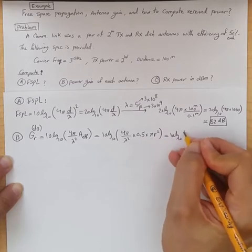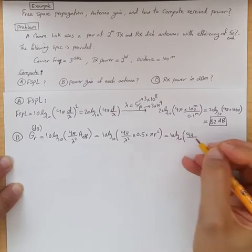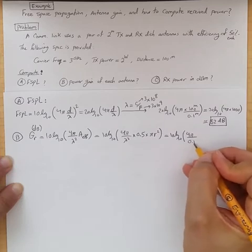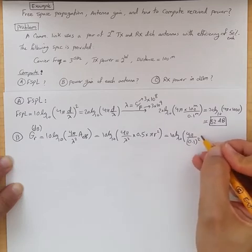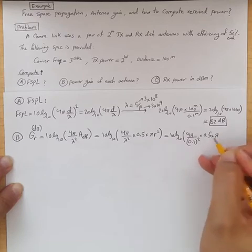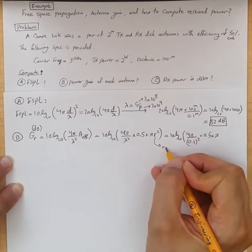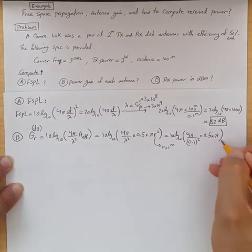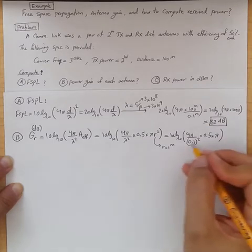So from here, we have 10 log 10, 4π. We got lambda of 0.1 meter squared times 0.5 times π, and again, R is 1 meter. So if you compute this,